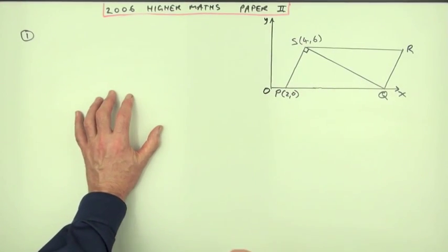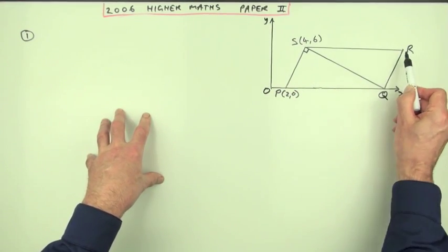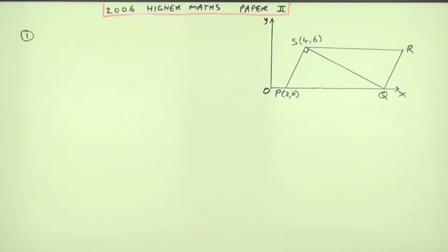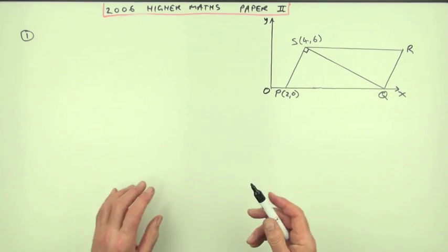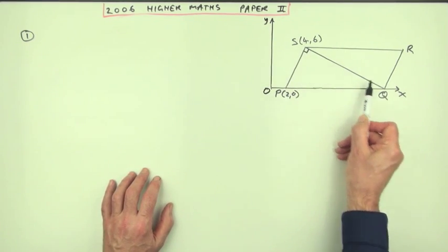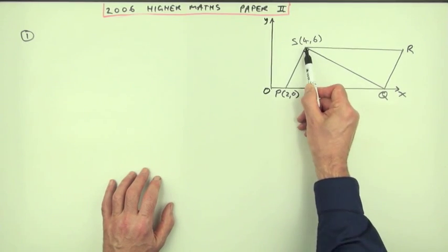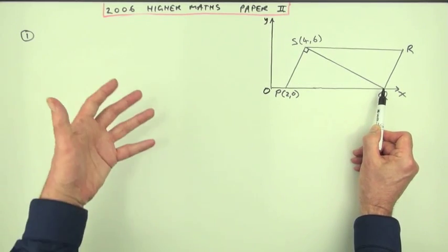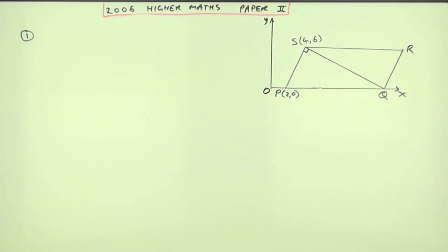Now, if this question had simply said, what are the coordinates of Q and R, you could have done it without using the equation of a line. And if you wanted the equation of a line, you could have found the equation of QS directly from S and Q, in effect, done the question backwards. But you probably wouldn't have. You'd have gone straight in with lines. It's going to be quicker that way. I'll mention this way anyway.